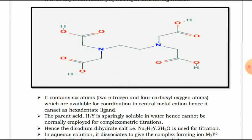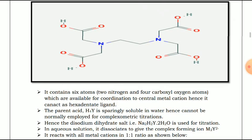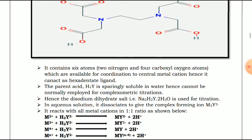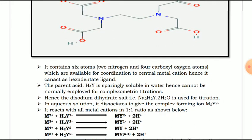In aqueous solution, it dissociates to give the complex-forming ion H2Y2-. EDTA reacts with all metal cations in a 1-to-1 ratio. For example, M2+ reacts with H2Y2- to form MY2- complex, liberating 2H+ ions. Similarly, M3+ plus H2Y2- forms MY- plus 2H+. There are four such reactions, all in a 1-to-1 ratio.